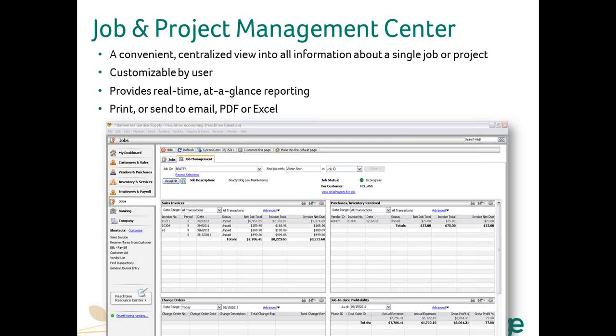An example is this job management center. It's a way to choose an individual job or project — you choose that project at the top, and then you can customize it. Each person who uses Peachtree can choose which modules are important for them, even rearrange the modules to their taste, and then from the modules easily drill down right from this management center. They can also sort information on the module by date so they can see what's going on this month, or see what happened in a prior period last month or this time last year for comparative analysis. The modules also have a total field, and those totals are automatically updated every time new information is entered into Sage Peachtree — on-the-fly reporting without having to run a report, pretty fast and easy.